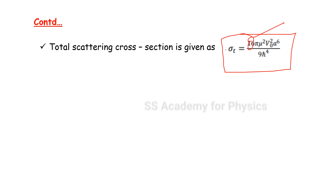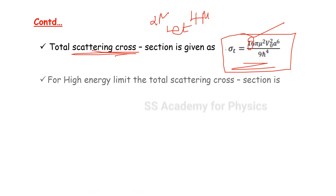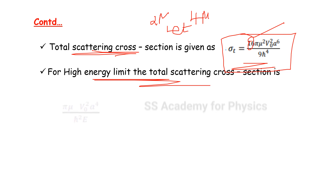This is an important key point — you can get confused between the total scattering cross section and the differential scattering cross section. For the low energy limit, the total scattering cross section involves terms with 2μ, V₀, and r₀. For the high energy limit, the total cross section involves (2μ V₀ a⁴) / (ℏ² E).